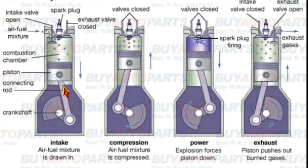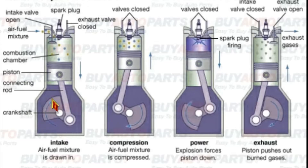The connecting rod connects the piston to the crankshaft. The crankshaft converts straight-line motion into rotary motion — that is the function of the crankshaft.